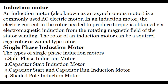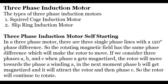Types of single phase induction motors: 1) split phase induction motor, 2) capacitor start induction motor, 3) capacitor start and capacitor run induction motor, 4) shaded pole induction motor. Types of three phase induction motors: 1) squirrel cage induction motor, 2) slip ring induction motor. A three phase induction motor is self-starting: with 3 single phase lines at 120 degrees phase difference, the rotating magnetic field causes the rotor to move toward each phase in sequence — A, B, then C — causing continuous rotation.